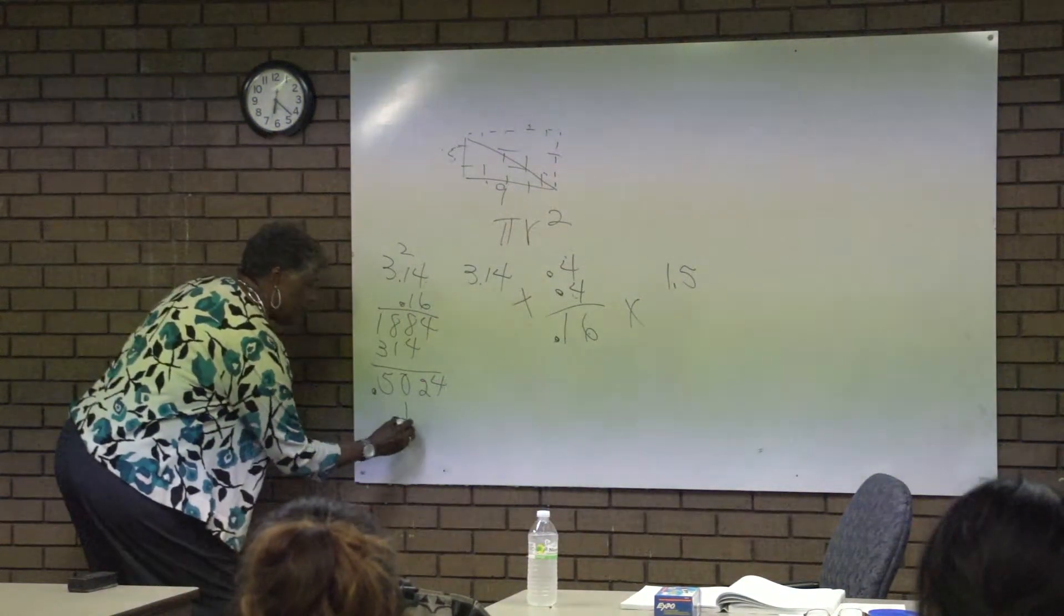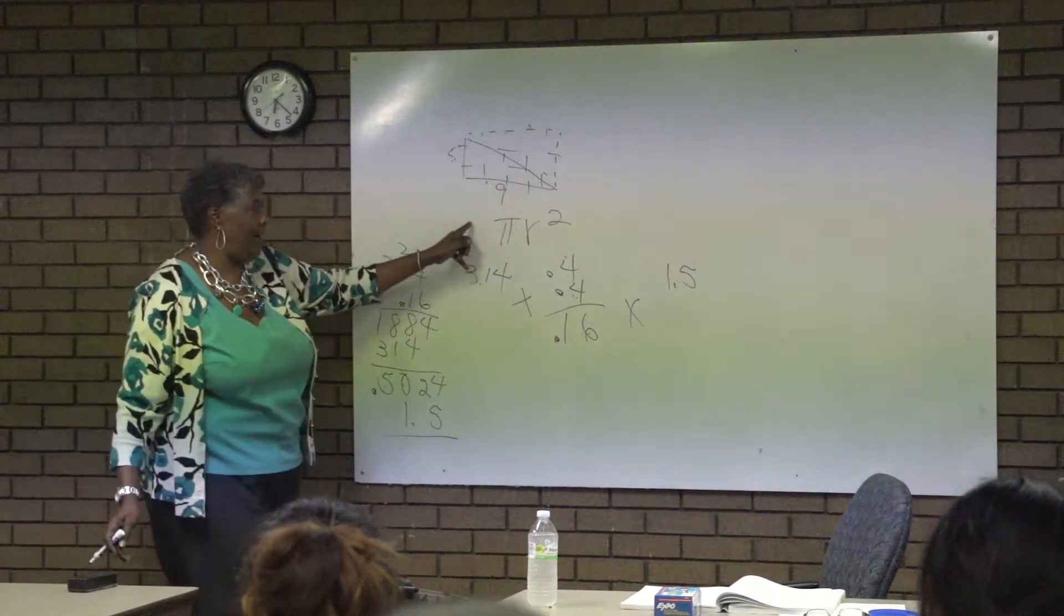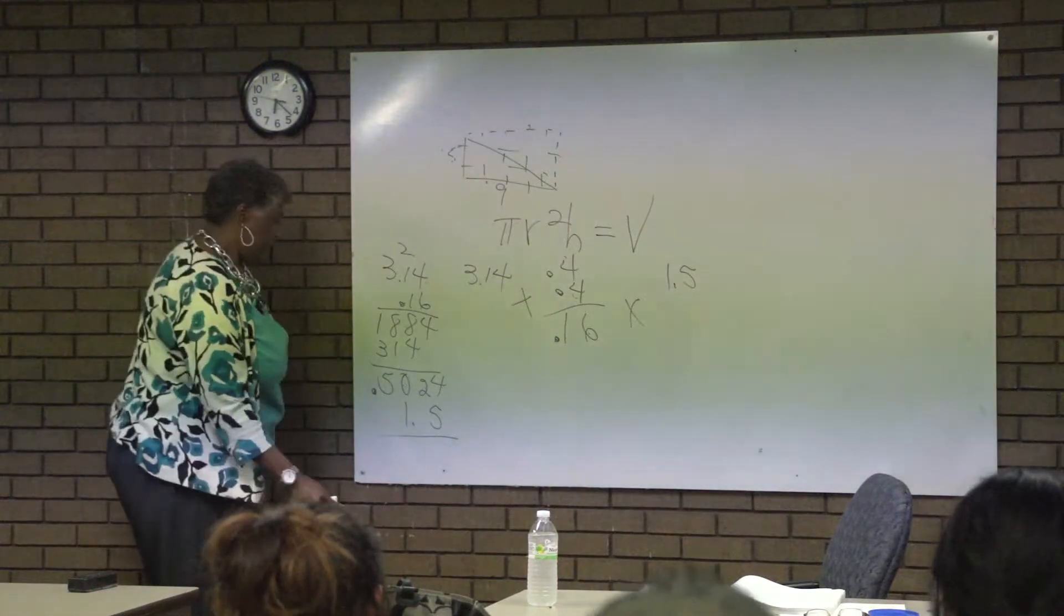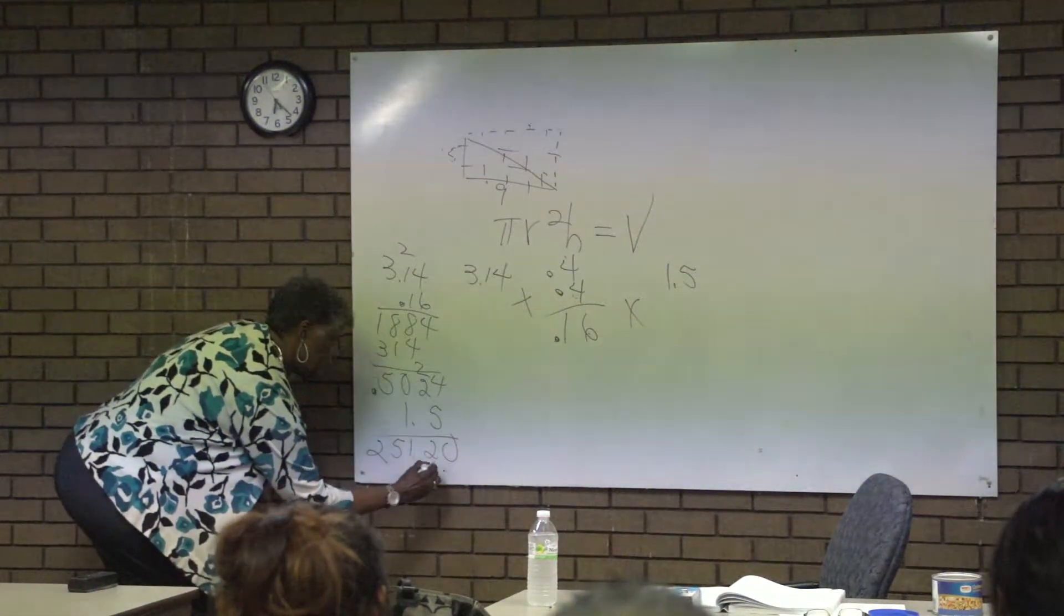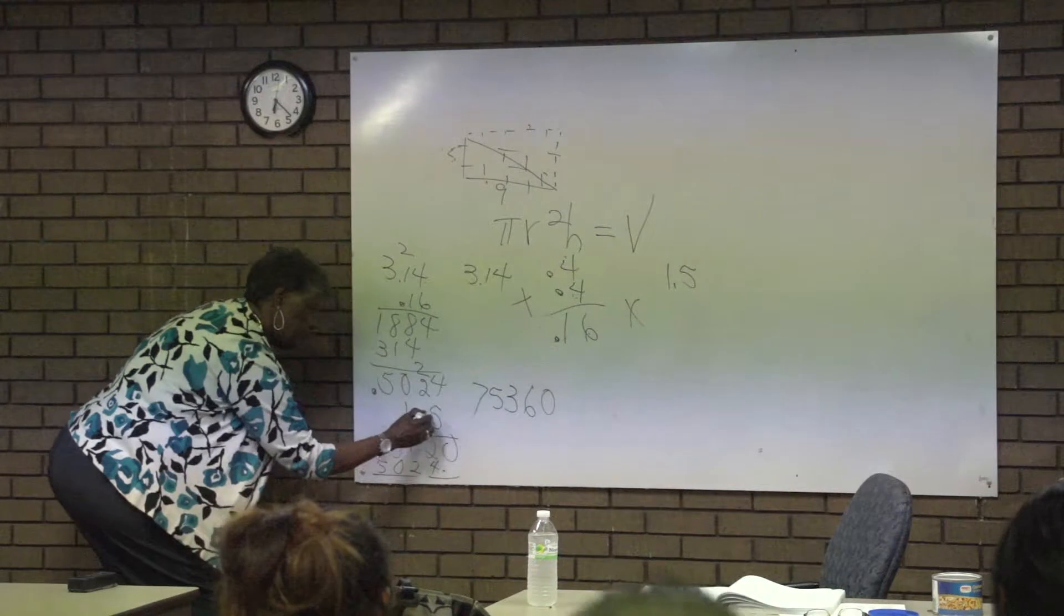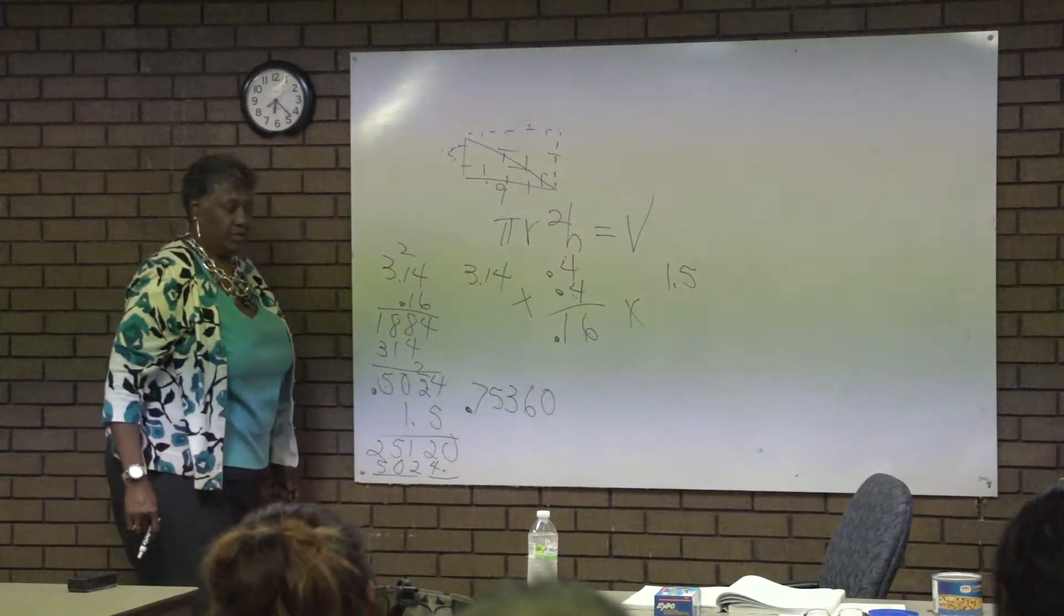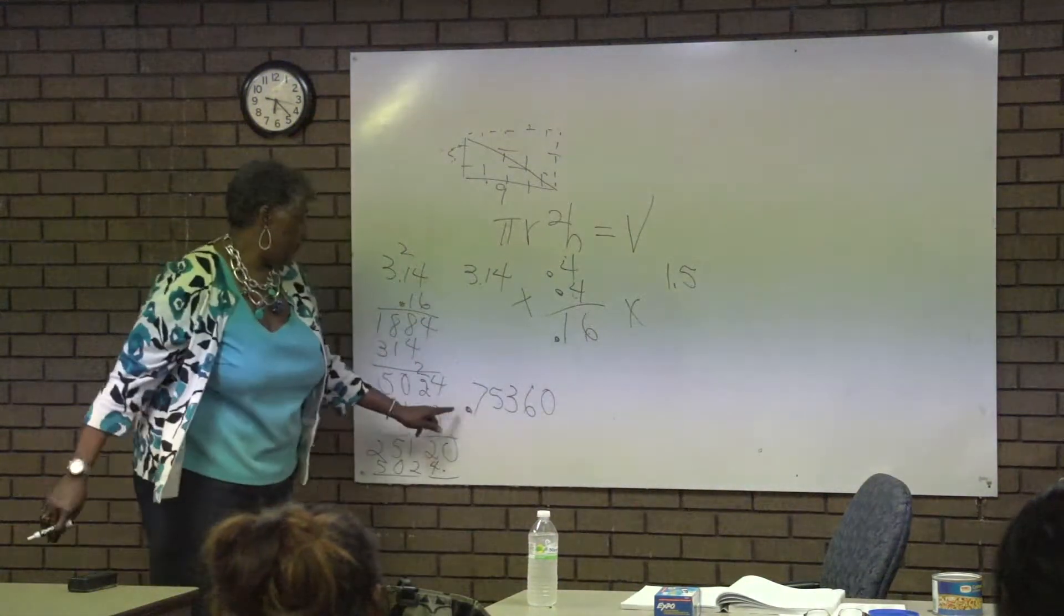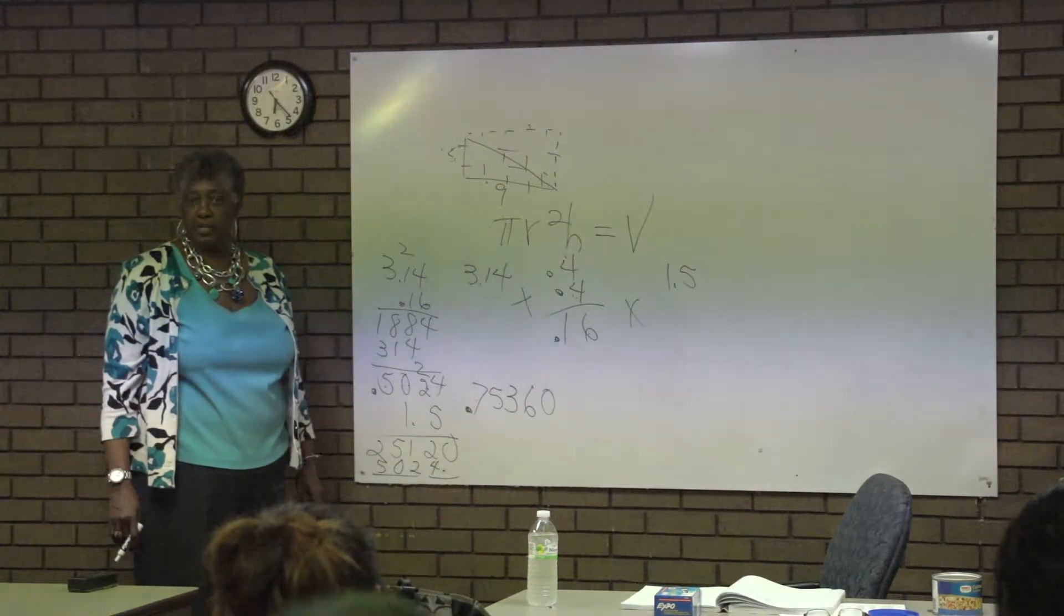And then times 1.5 is a formula. That means if you do this, this, and that, you're going to come up with the answer, and it says that if you multiply pi times the radius squared times the height, you're going to get the volume of that cylinder. And you need to always write it down before you start.